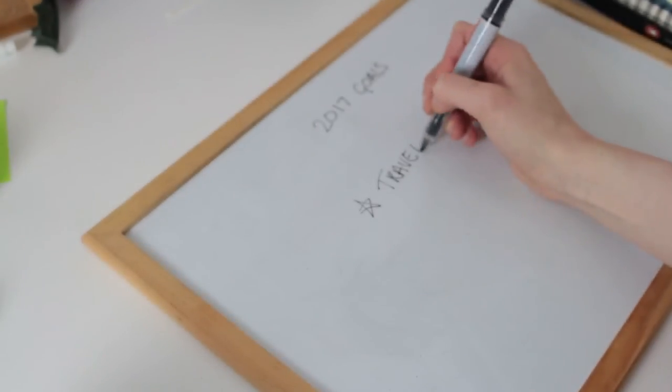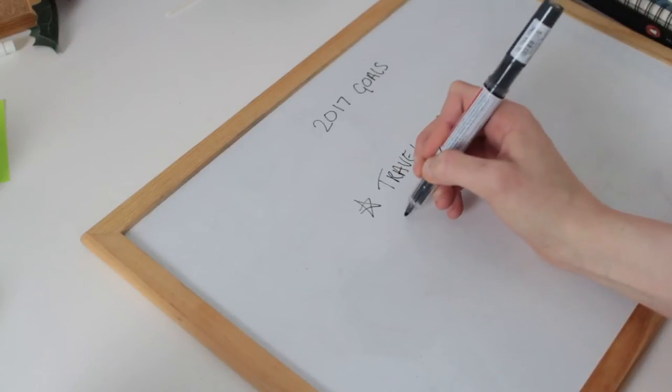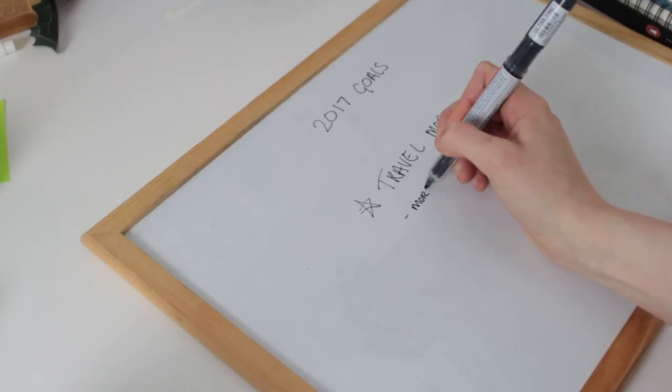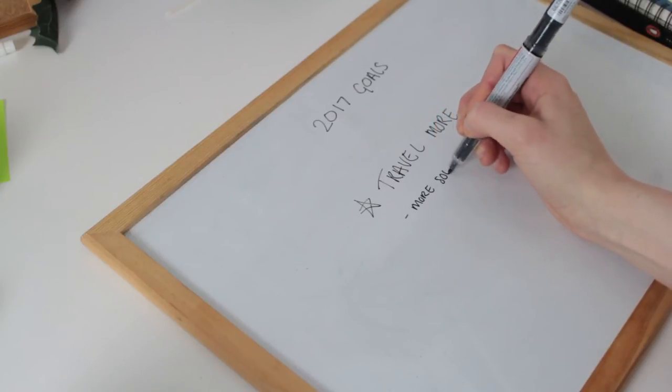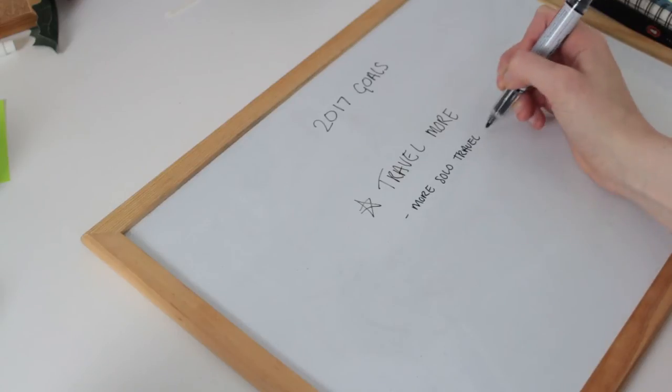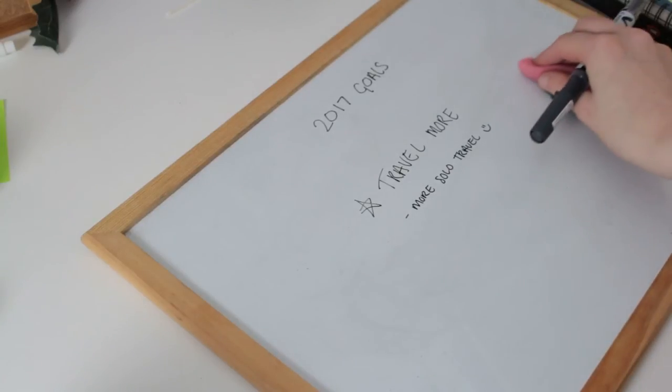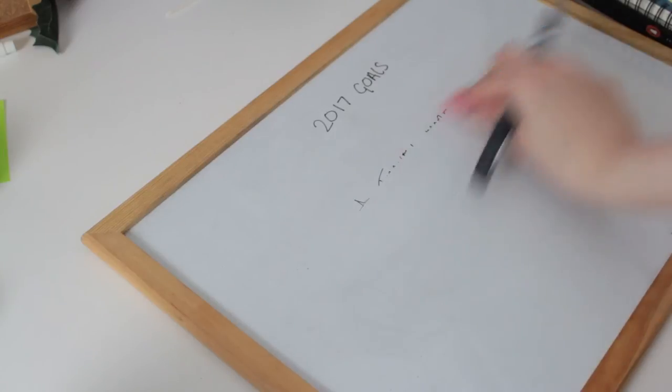Number four is another really popular one which is to travel more. In 2016 I got to go to Italy and Austria with my family and the year before that I went to Slovenia, but I really want to see more of the world and I also want to see more of the world by myself. I think solo travel is something that I really want to do more of. Top of my list, if you follow me on Twitter you'll know this, top of my list is Singapore. I have so many friends to see in Singapore and I will make it happen.